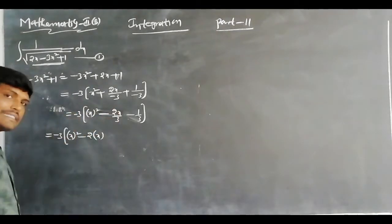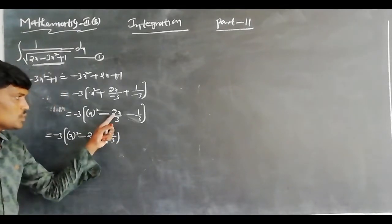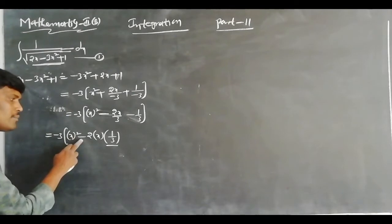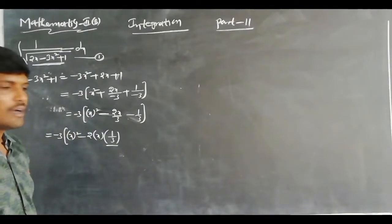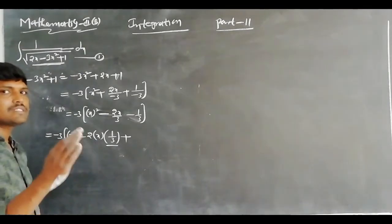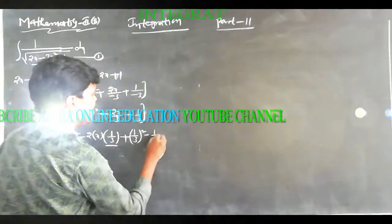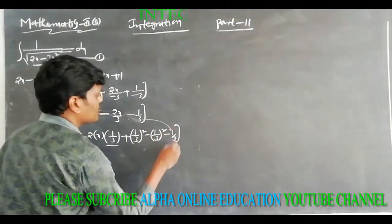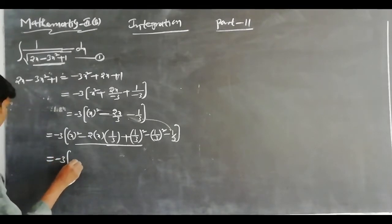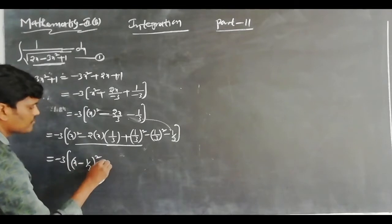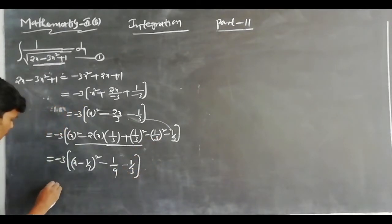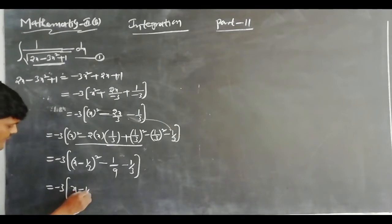We need a² - 2ab + b² to form a perfect square. Since b² = (1/3)² = 1/9 is not present, we add and subtract 1/9. This gives: -3[(x - 1/3)² - 1/9 - 1/3]. Taking the minus 3 internal: -3(x - 1/3)² + 4/9 + 1. Combining: -3(x - 1/3)² + (1 + 3)/9 after finding LCM of 9.